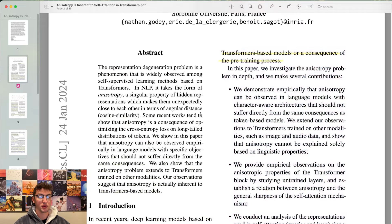Literature currently suggests that it may be a consequence of optimizing the cross-entropy loss on long-tailed distributions of tokens. However, it remains uncertain whether anisotropy is a fundamental property of transformers-based models or a consequence of the pre-training process.